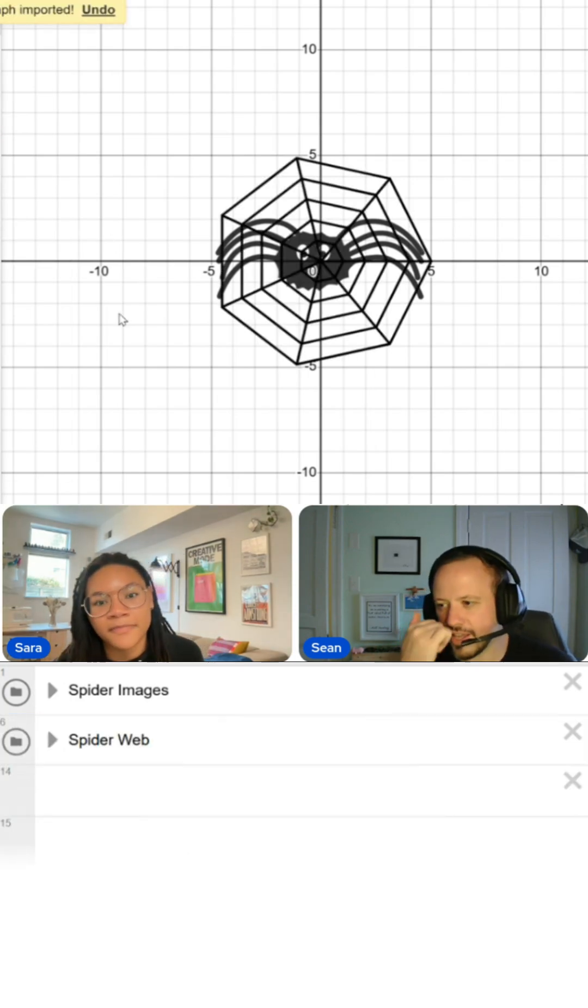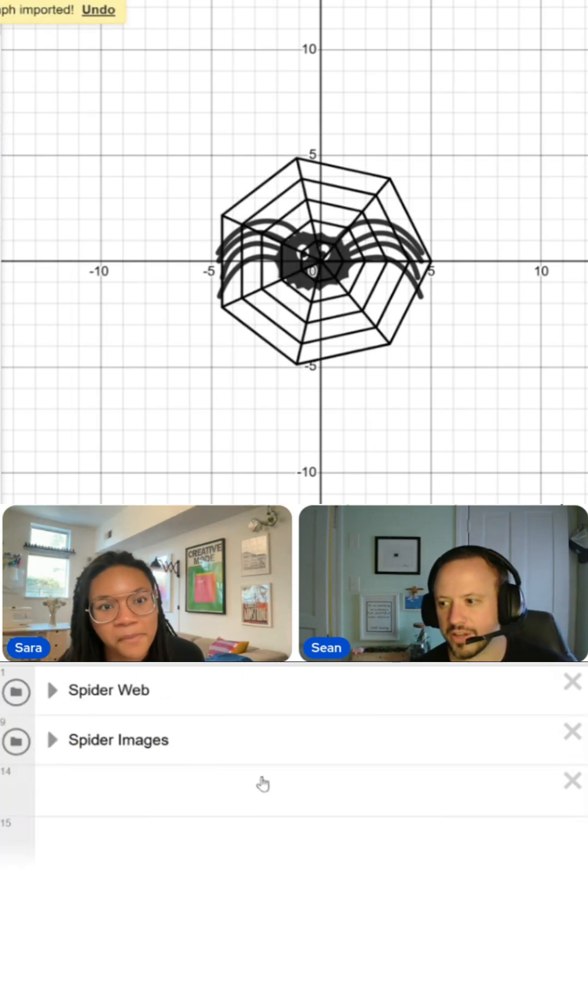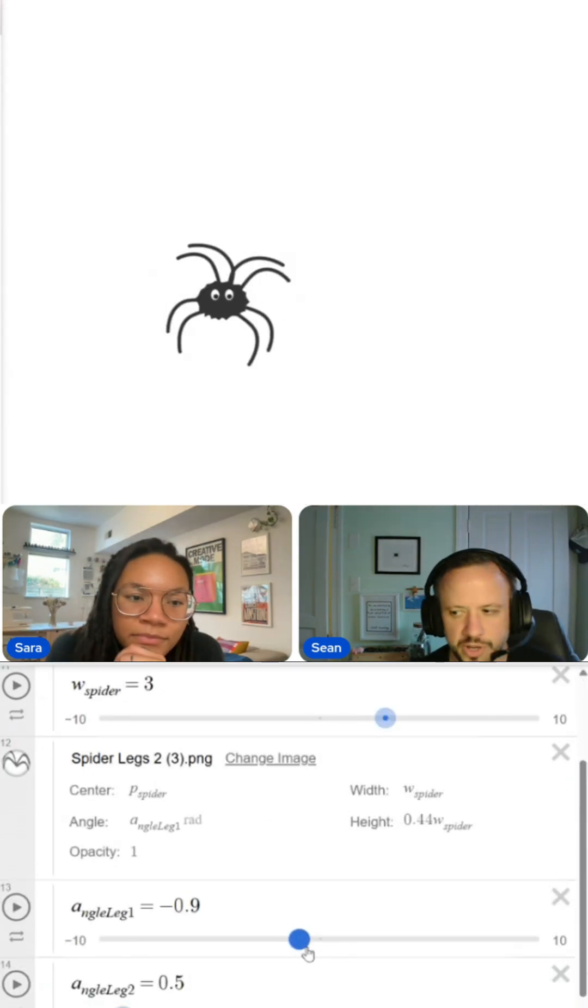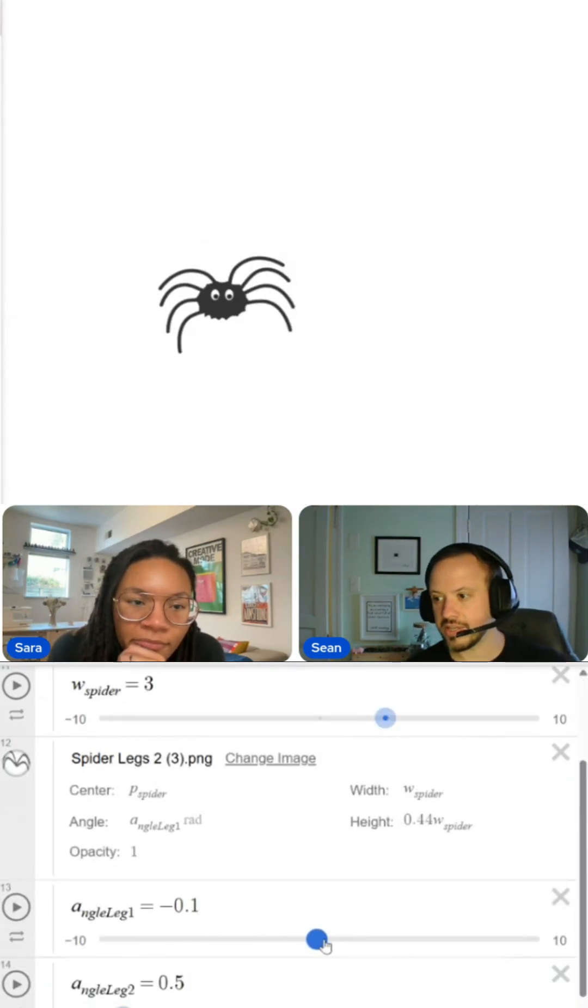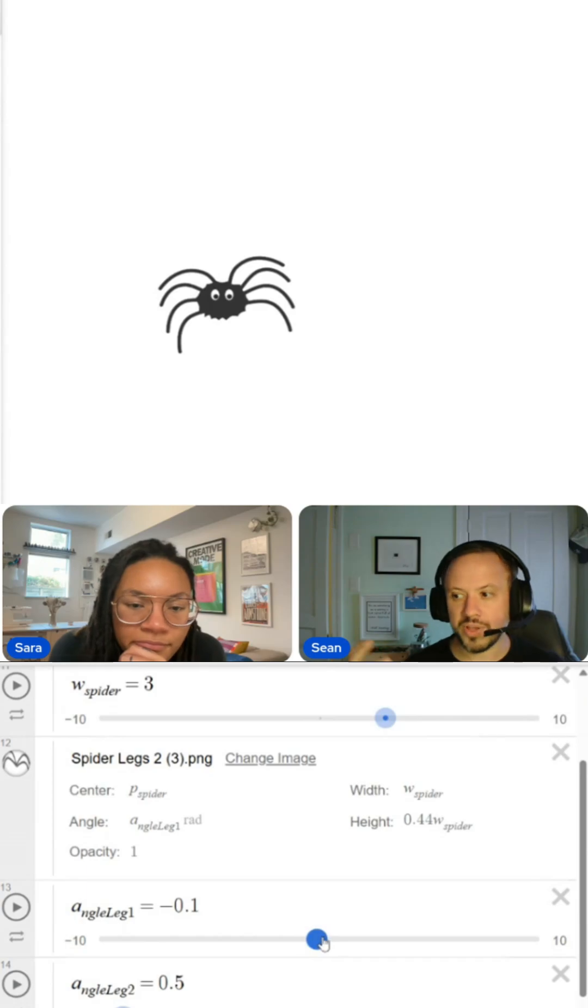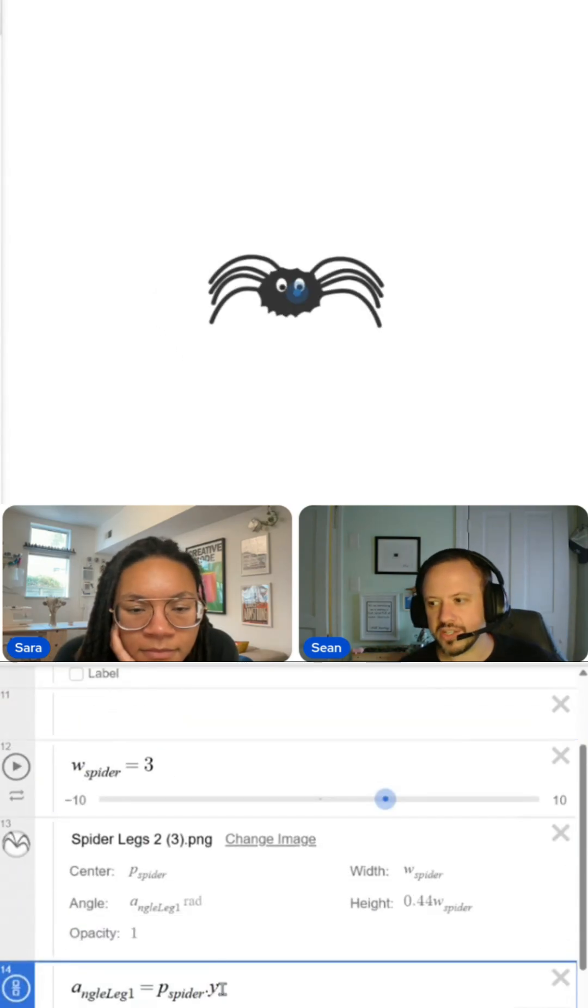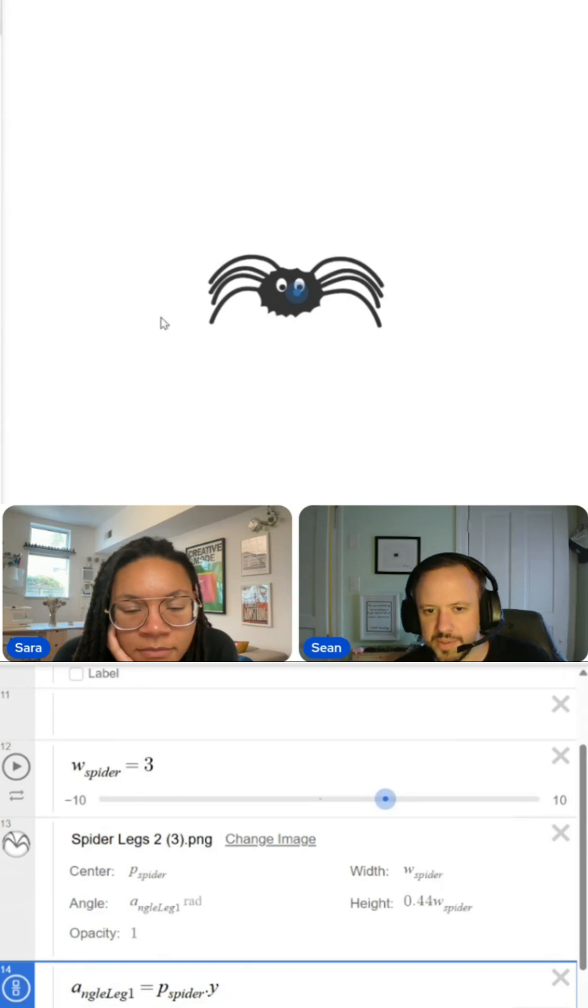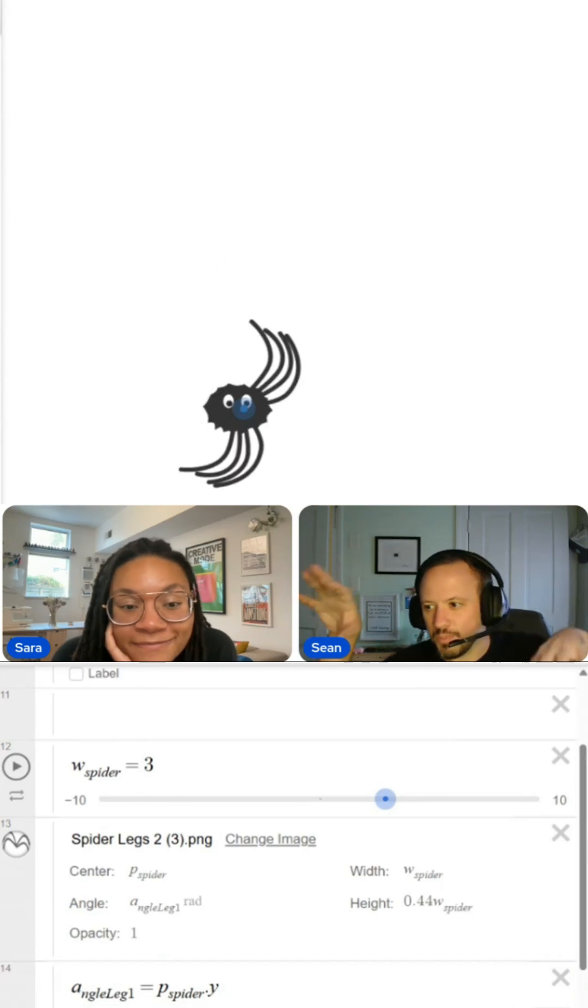I have a spider prepared. Again, we use a lot of images in the graphing calculator because they run pretty fast. I have this spider in different parts because I want to make this spider move. I want the legs to move separate from the body. If you make how the legs move based on something like the Y position, it'll just automatically move its legs.